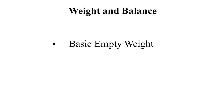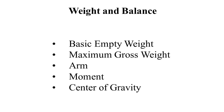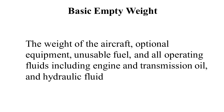The following terms are used when computing a small UAS weight and balance: basic empty weight, maximum gross weight, arm, moment, and center of gravity. The starting point for weight computations is the basic empty weight. This is the weight of the aircraft, optional equipment, unusable fuel, and all operating fluids, including engine and transmission oil and hydraulic fluid for those aircraft so equipped.